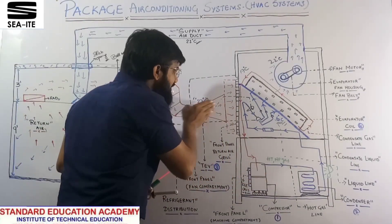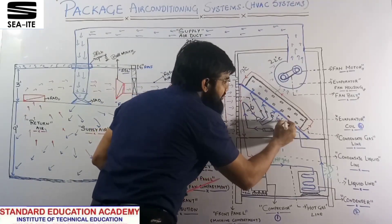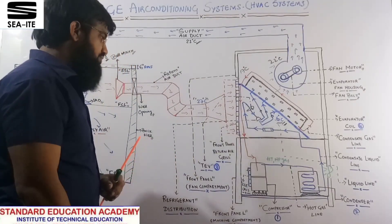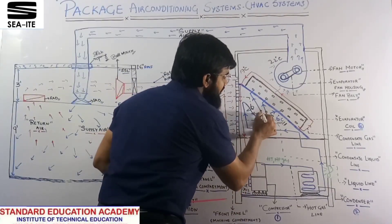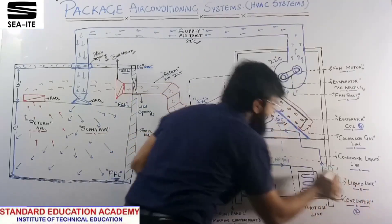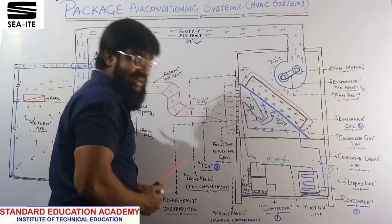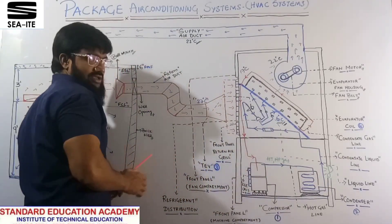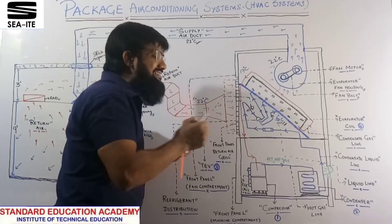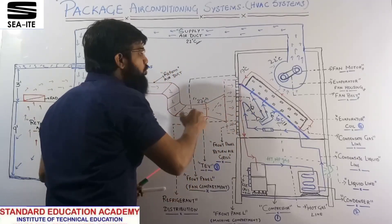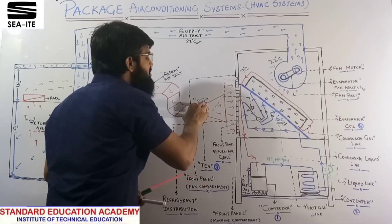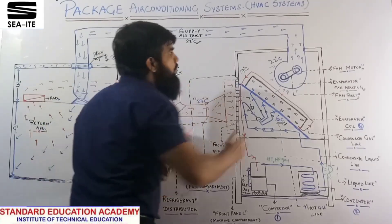As the return air comes in at 27°C, the refrigerant is distributed at a temperature of 6°C in liquid state. This is a liquid line. Return air at 27°C meets refrigerant at 6°C, so the return air rejects its heat to the liquid refrigerant. As a result, the air temperature converts from 27°C down to 22°C.